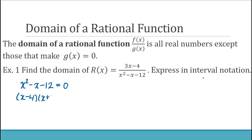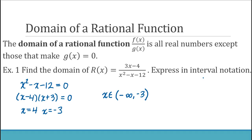The denominator factors to (x minus 4)(x plus 3), so the two values that make the denominator equal zero are 4 and negative 3. The domain is all real numbers except 4 and negative 3, written in interval notation as negative infinity to negative 3, union negative 3 to 4, union 4 to infinity — all real numbers except negative 3 and positive 4.